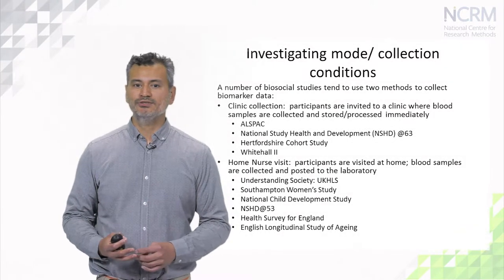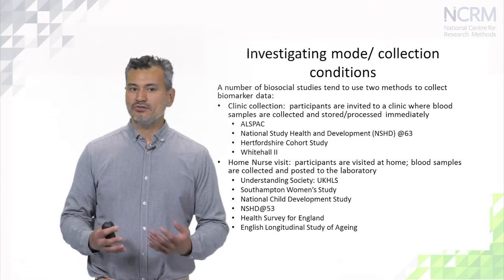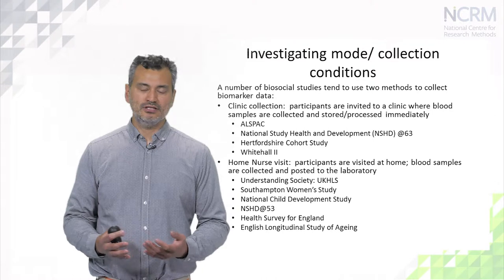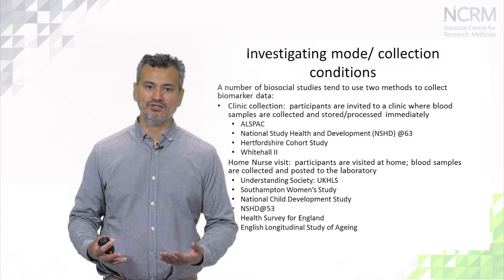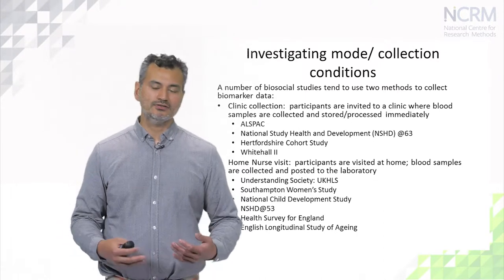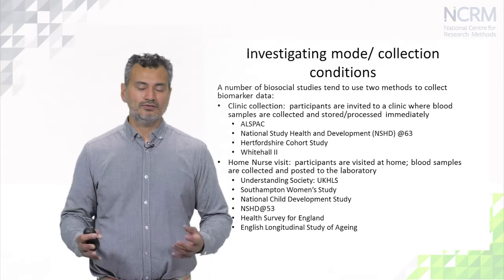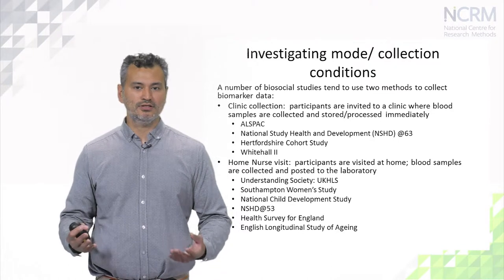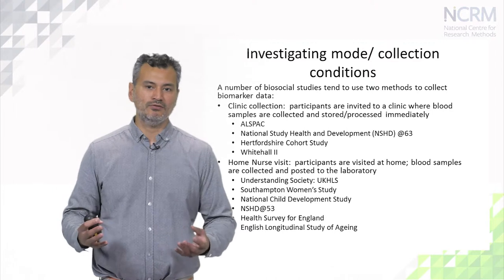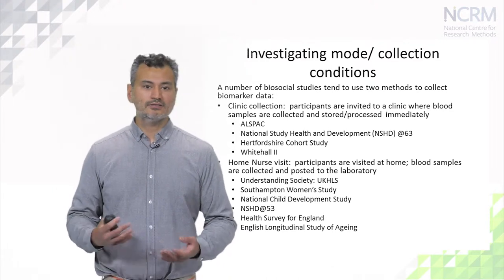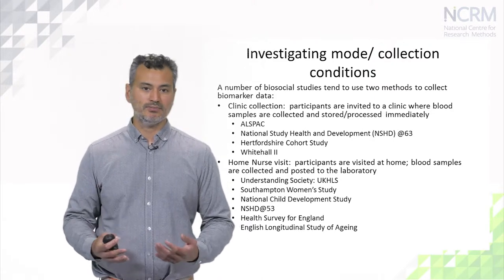A number of biosocial studies tend to use two kinds of methods to collect biomarker data. The gold standard is the clinical collection, because it's a very standardized process. Participants are invited to come to the clinic, so the blood samples are collected and stored and processed immediately. Because that's a very controlled environment, the biomarkers obtained are thought to be of a very high quality standard.